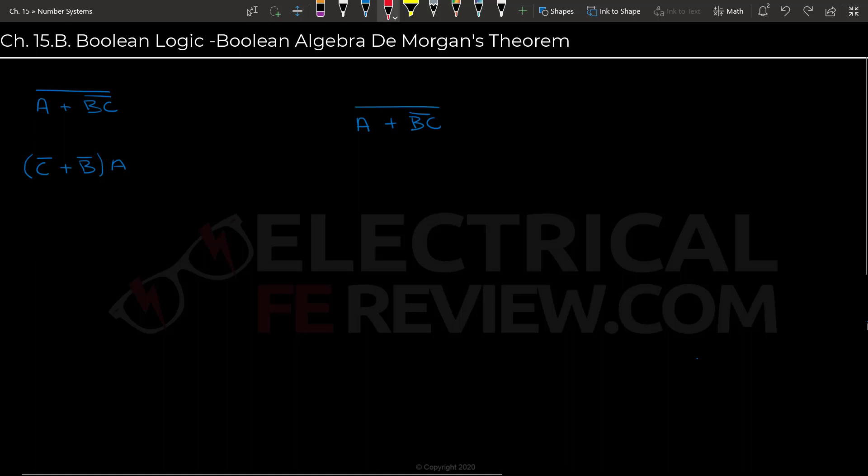it would be good to look at this term right here. The B and C NOT. So according to DeMorgan's theorem, B and C NOT are equivalent to B NOT or C NOT.